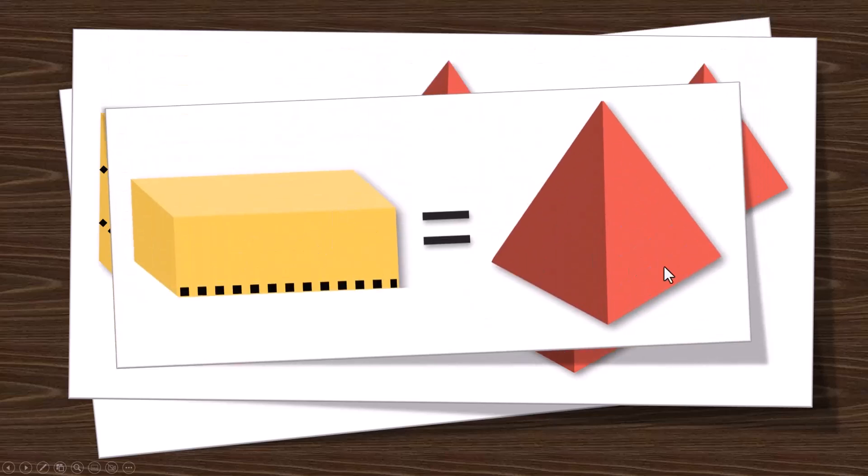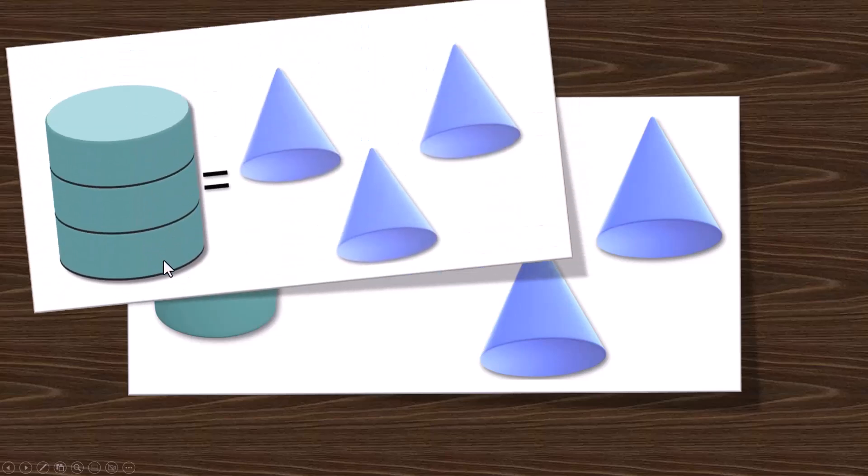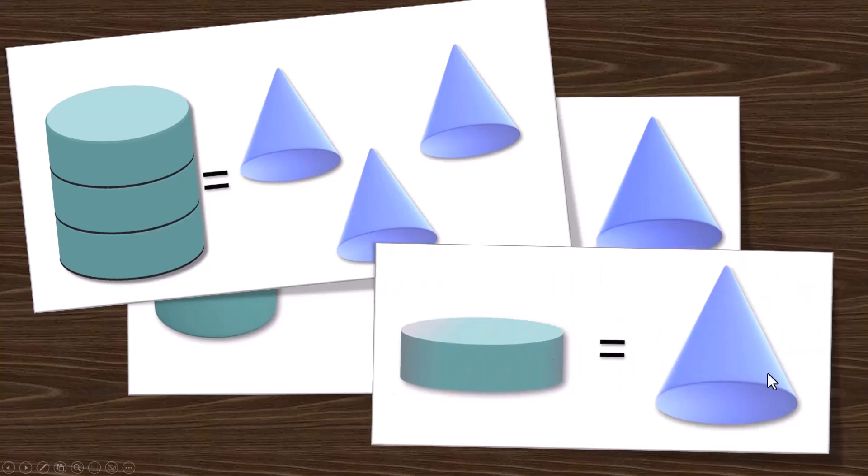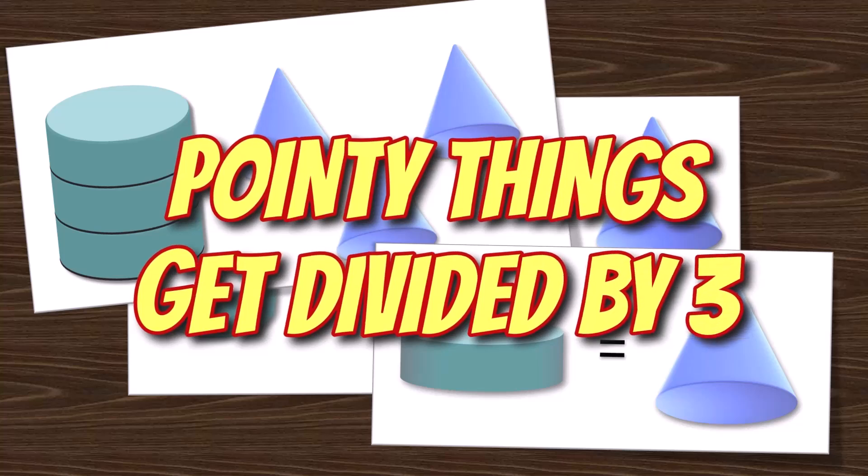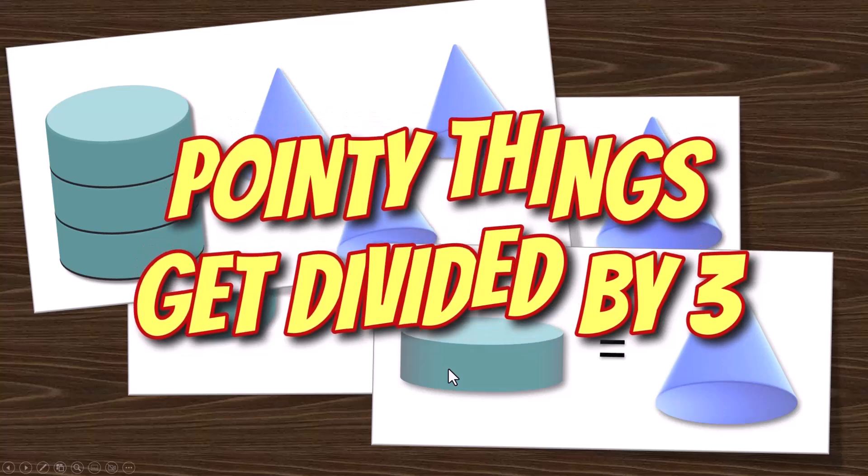But three pyramids equal one box so the relationship is if you took that box and you split it into thirds one third of a box would equal one pyramid. Same thing is true about cylinders and cones. If the area of the base which is a circle if the same size circle is on the bottom of the cone and the cone is the same height as the cylinder you're going to pour three cones into the cylinder to fill it up. So if you take a cylinder and divide it by three you get one cone. That's the idea. So when I start doing these problems I want you just to remember something and I'll say it repeatedly pointy things get divided by three.